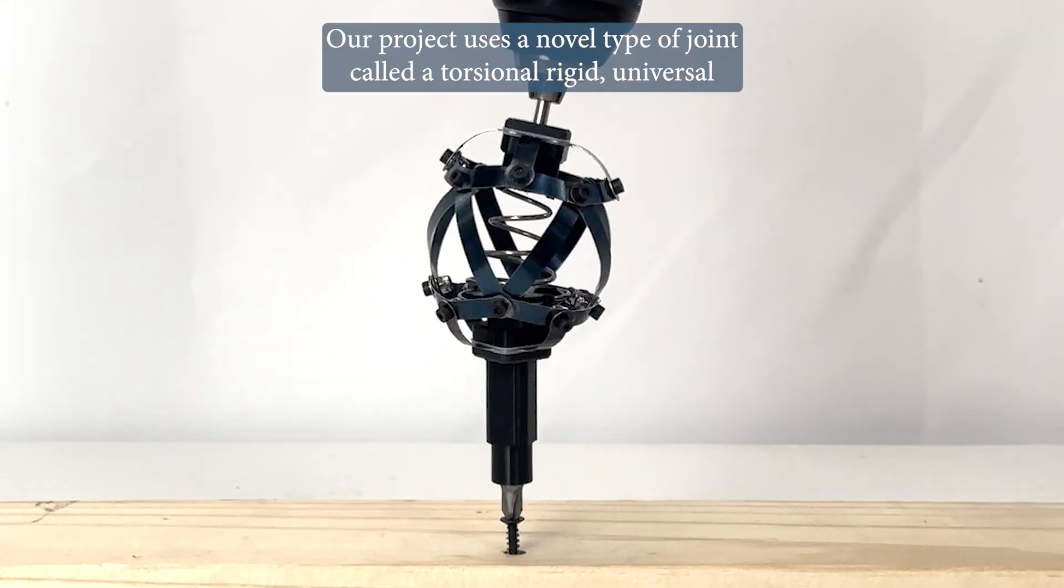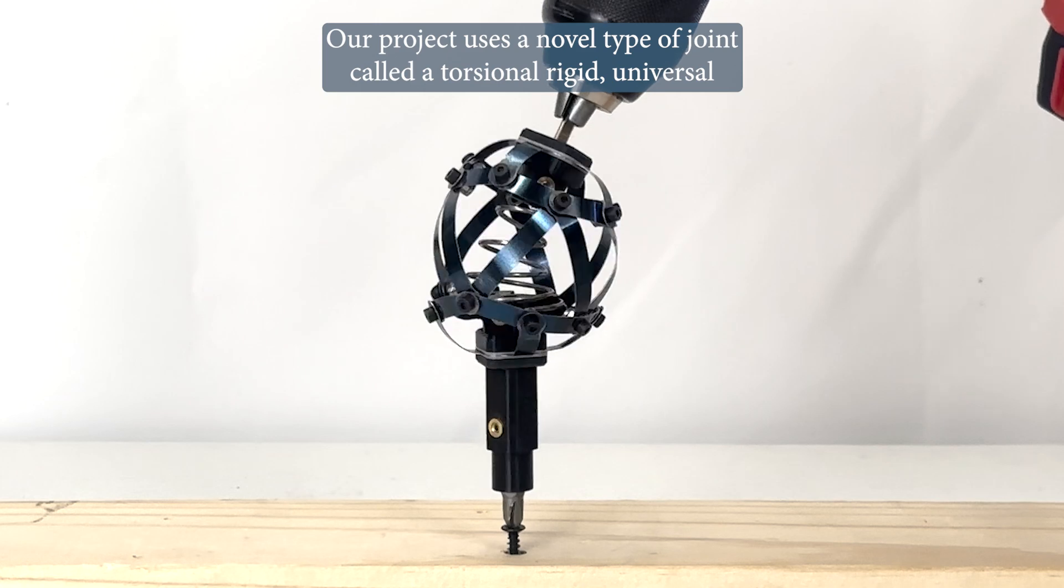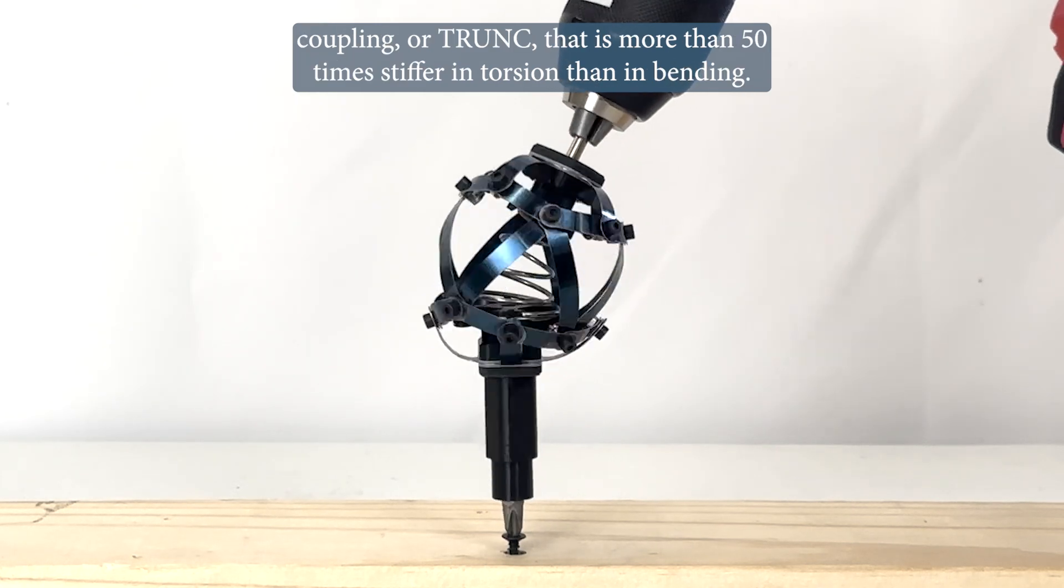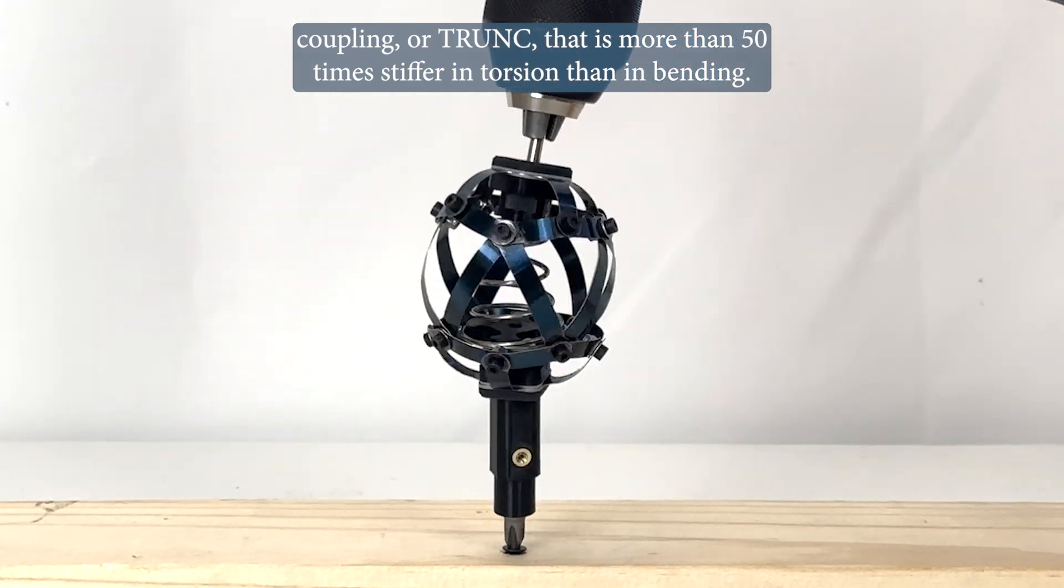Our project uses a novel type of joint called a torsionally rigid universal coupling, or trunk, that is more than 50 times stiffer in torsion than in bending.